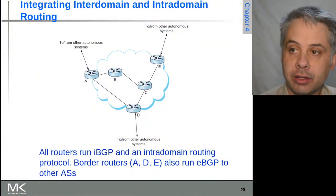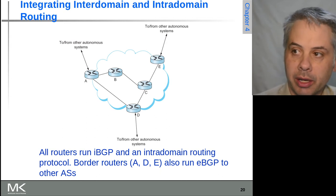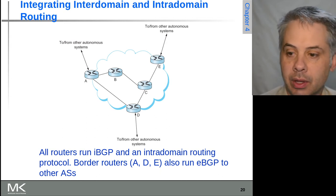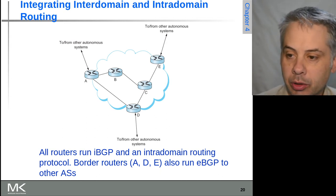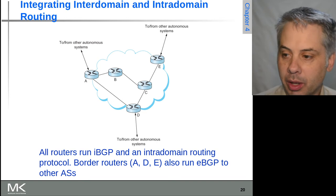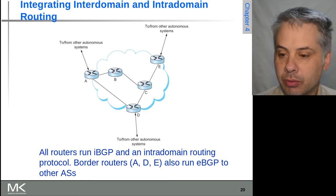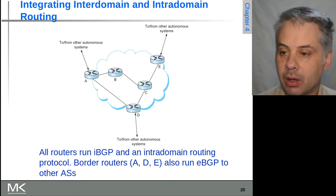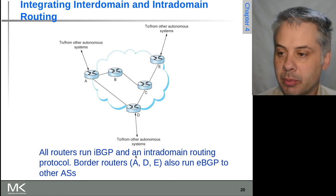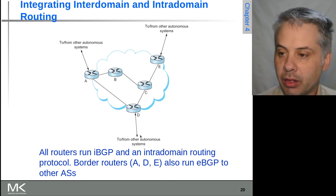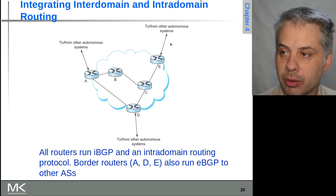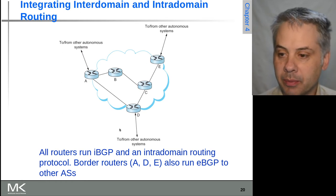Let's have a look at integrating the inter-domain and intra-domain routing with BGP. We have the internal BGP listed as IBGP, and then the external-facing part where we're going to and from other autonomous systems is the EBGP.